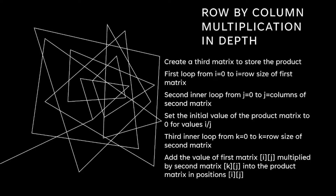Looking more in depth into how the row by column multiplication is completed, there are a few things that must be done. First we must create a third matrix that has the row size of the first matrix and the column size of the second matrix. Next we create a loop from i equals zero to the row size of the first matrix. After this we will create a second inner loop that goes through values from j equals zero to the column size of the second matrix. In this loop we will set the initial value of the product matrix to zero in spots i and j. Lastly, in a third inner loop from k equals zero to the row size of the second matrix, we will add the values of the first matrix in positions i and j multiplied by the second matrix in position k and j into the product matrix in positions i and j.